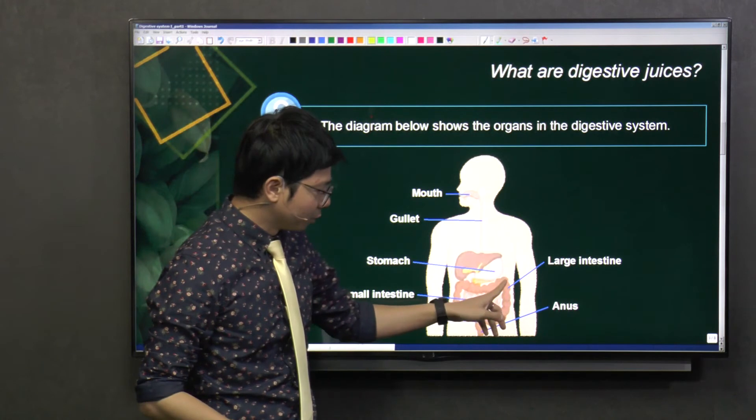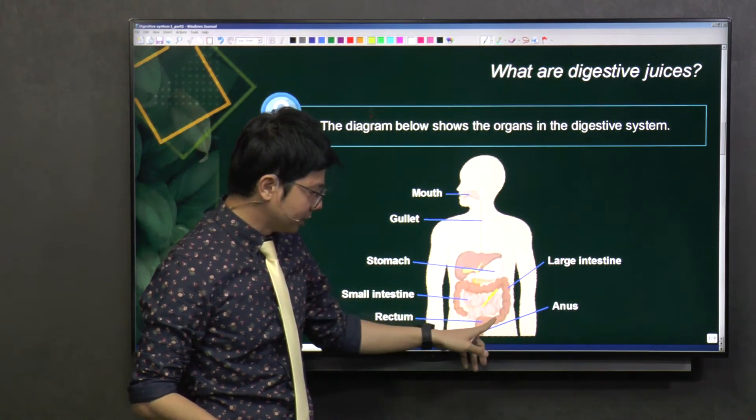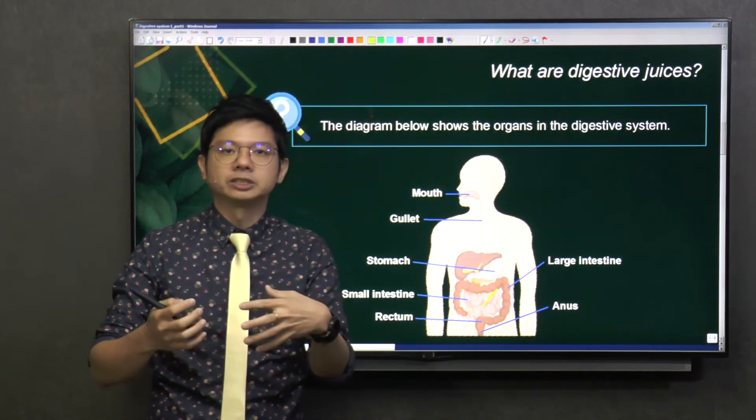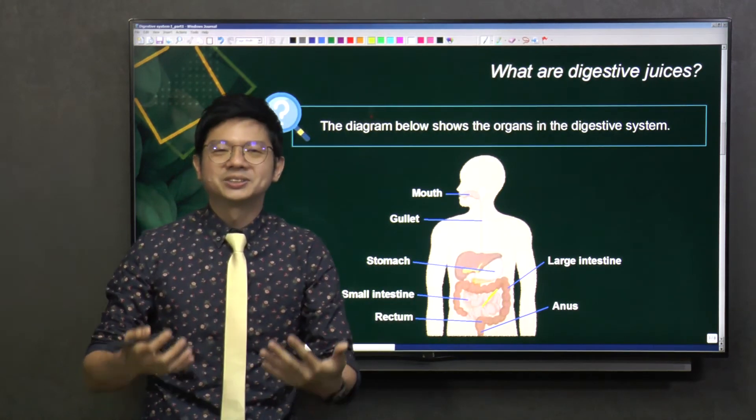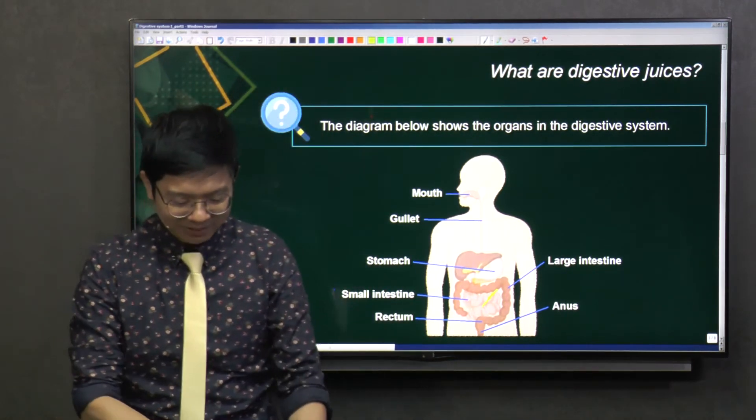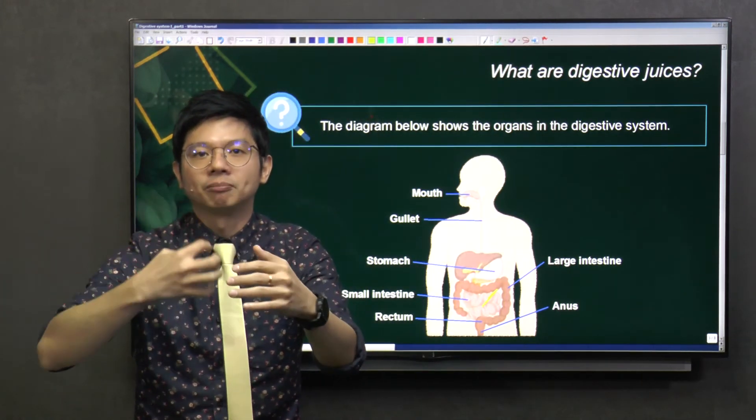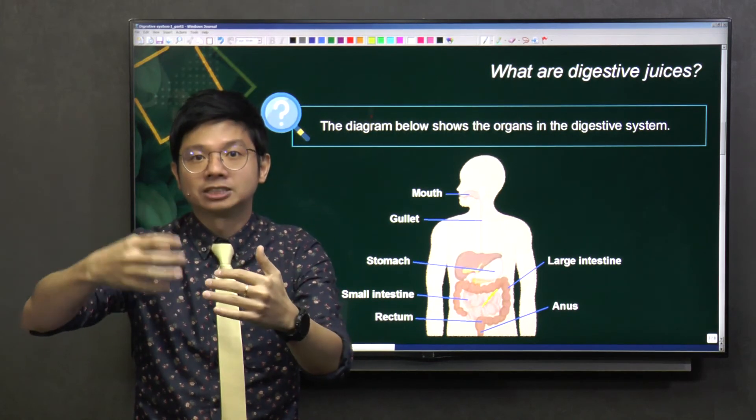Eventually, the food will go down all the way to the rectum. This rectum is a place where we store our poop. When the food is being digested and absorbed, the nutrients are being absorbed.